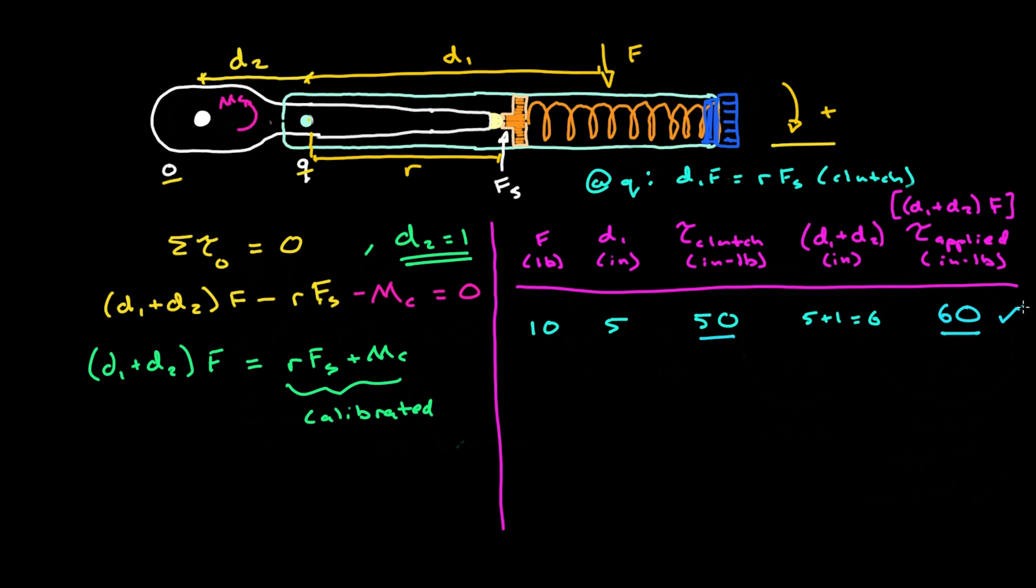The problem here is that when you change your grip position, the applied torque at the bolt changes even though the wrench still clicks at the same torque setting. To see this, let's now suppose we really choke up on the handle at a distance D1 of only two inches. Of course, we'll have to apply a larger force to get the wrench to click. This part is intuitive. In this case, a force of 25 pounds will apply the same torque at the clutch of 50 inch pounds and consequently, the wrench will still click just as it did in the previous scenario. But the applied torque at the socket is again D1 plus D2 or three inches now times the applied force of 25 pounds for an effective applied torque at the socket of 75 inch pounds, which is much greater than the 60 inch pounds in the previous example. And remember, in both cases, the wrench still clicked at the exact same dial setting.